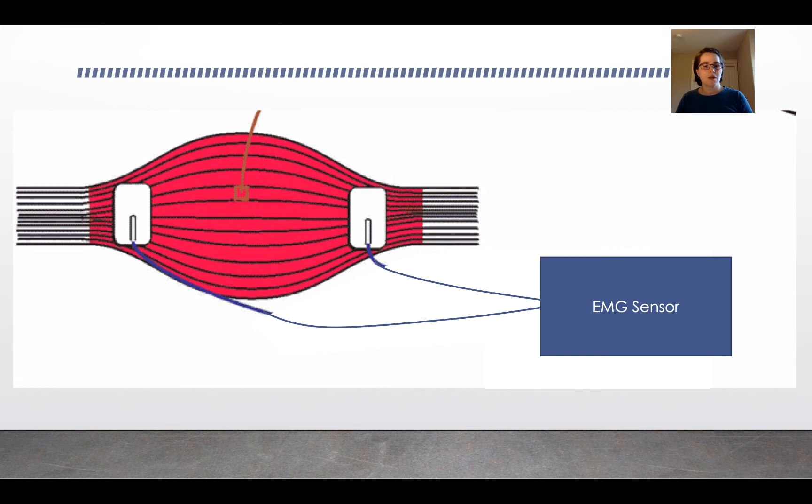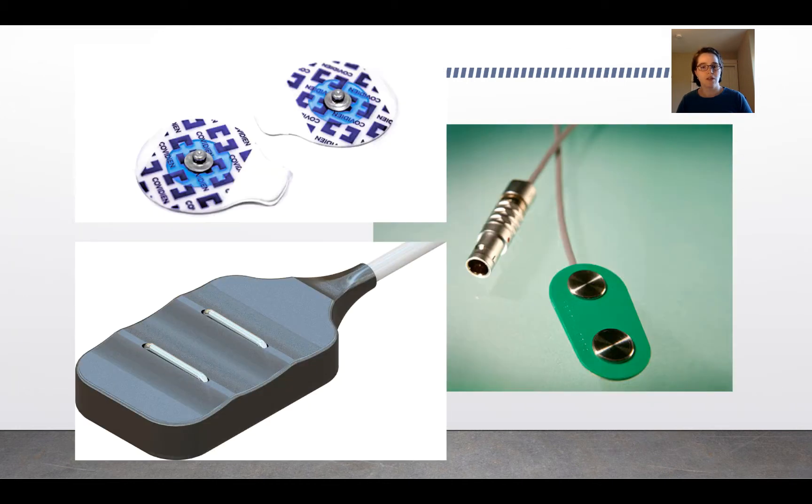So what we do is we place an electrode on the muscle belly or near the muscle belly. Typically you want your electrode aligned with the muscle belly, and there are two sensors that are connected to the EMG. The contraction of the muscle will generate a signal.